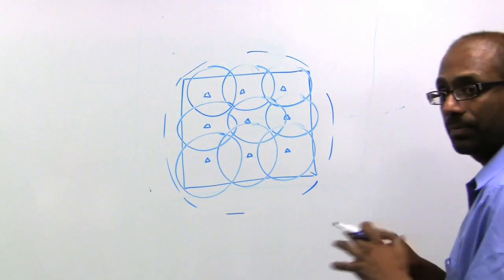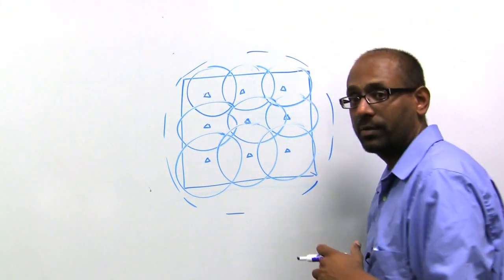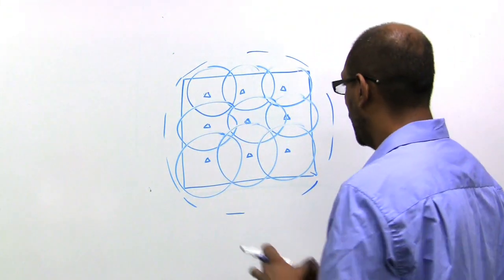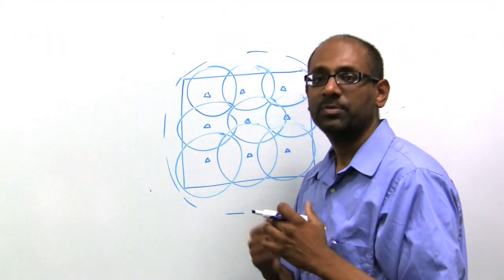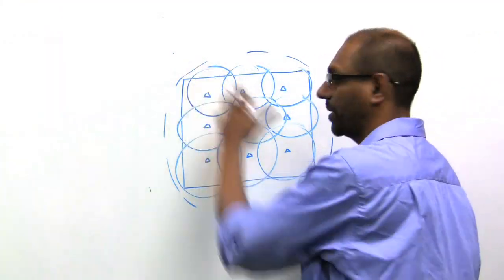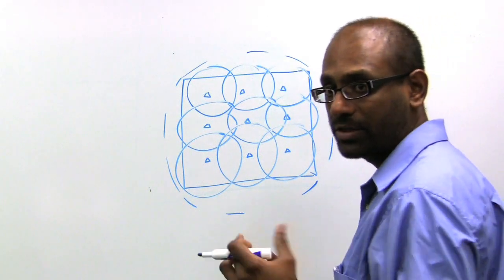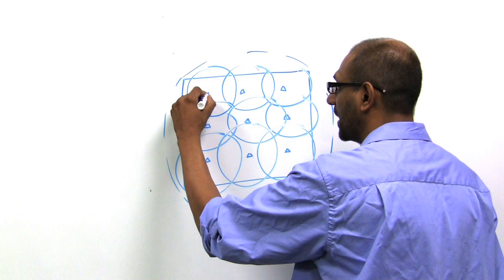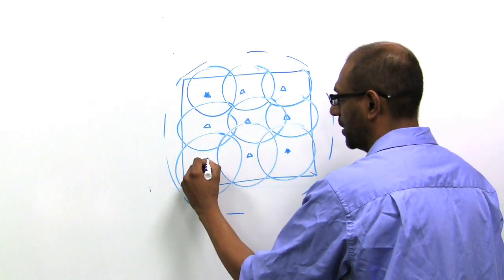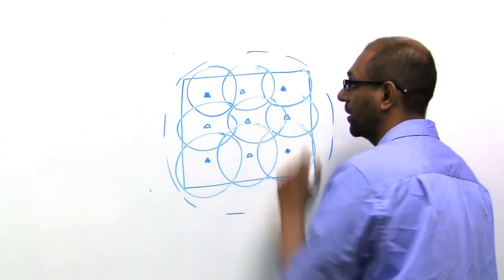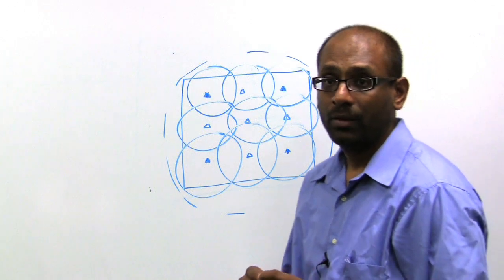The question that we have in this video that we seek to answer is, how many simultaneous transmissions can happen given this particular coverage map? And you can sort of just look at this and reason for yourself that this access point, this access point, this one, and this one can communicate at the same time.